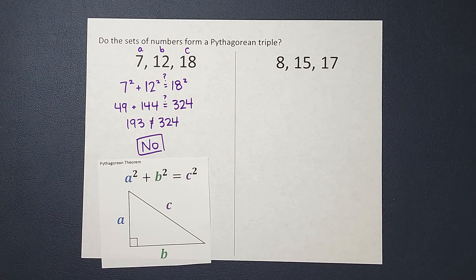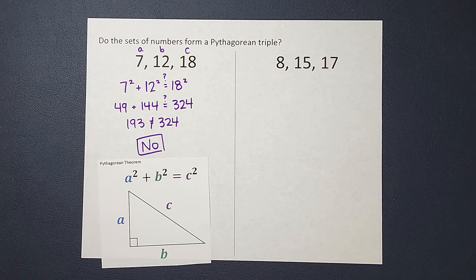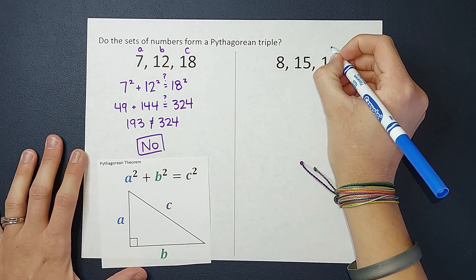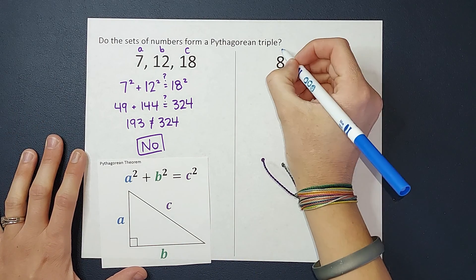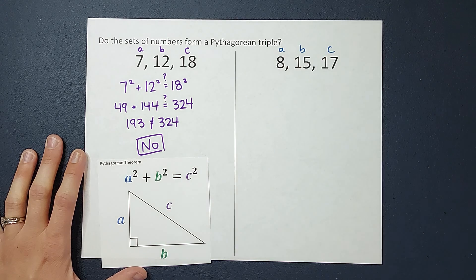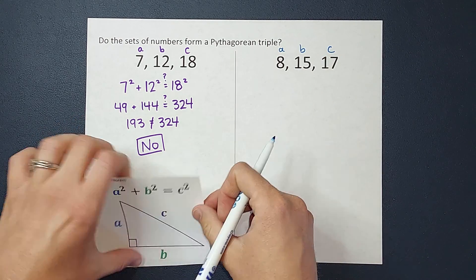All right, again, my biggest number is C. So in this case, it's 17, and then these guys are A and B, doesn't matter which, so we'll just have those be A and B.